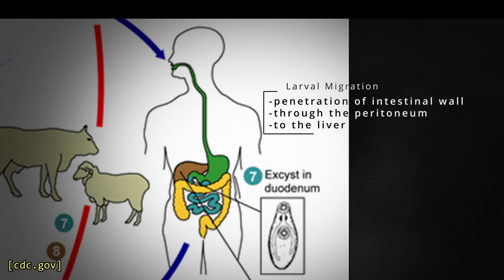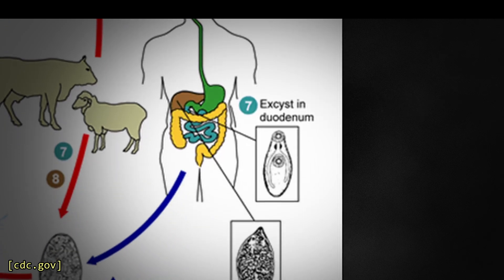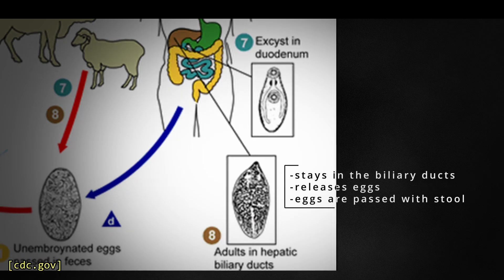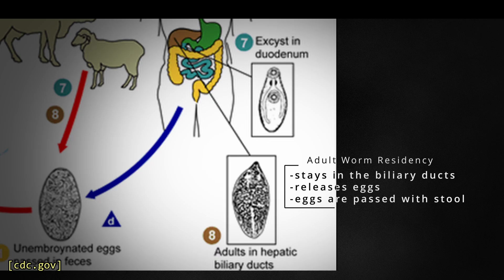Once inside the liver, the flukes continue their migration as they further develop while feeding on mostly liver parenchyma. After about 6 more weeks, they finally locate the biliary ducts and fully mature into adult worms. Maturation takes about 3 to 4 months from ingestion, and the lifespan of the mature fluke is around 9 to 13 years.